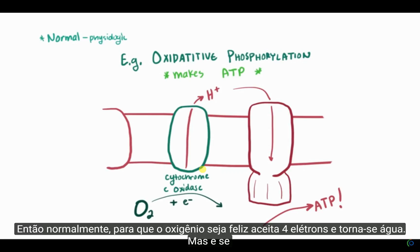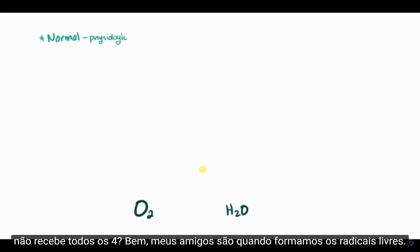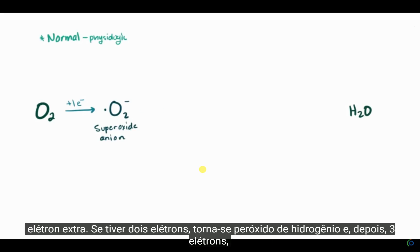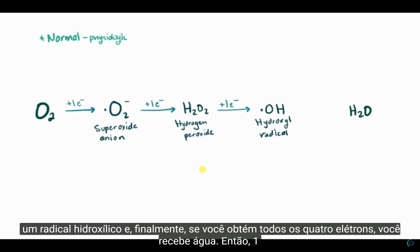Normally, for oxygen to be happy, it accepts four electrons and becomes water. But what if it doesn't receive all four? That is when we get free radicals. If oxygen grabs just one electron, it becomes superoxide — O2 with a little dot for its extra electron. If it gets two electrons, it becomes hydrogen peroxide. And then three electrons, it's the hydroxyl radical. Finally, if you get all four, you get water.